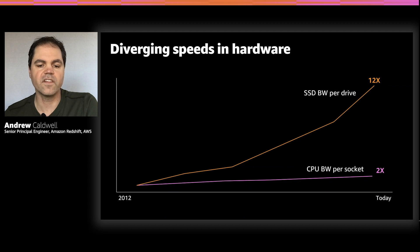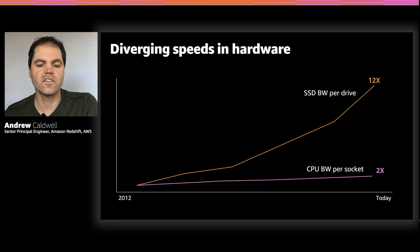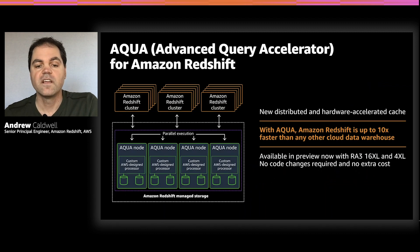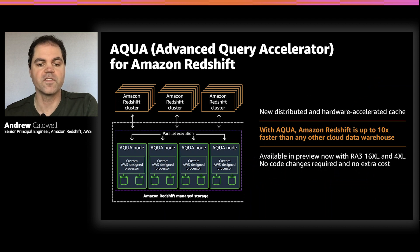Looking at these trends, we felt that to truly get the benefit of the fastest SSDs available, we need to not just execute scans and aggregations against data in locally attached storage, but to leverage hardware accelerated processing that sits right next to that storage, so we can perform analytic computations as fast as the data can possibly be read. And that's Aqua for Amazon Redshift — a new distributed and hardware accelerated caching layer for Redshift that provides the next phase of performance improvements and innovation for analytics at the new scale of data.